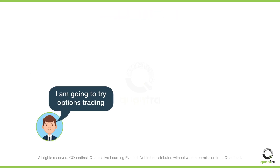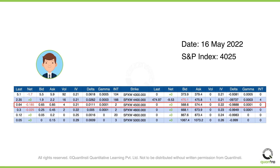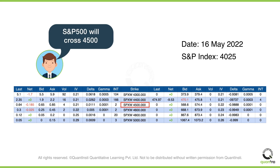John has learned about options and is excited to try his luck with options. On 16 May 2022, the S&P 500 index is at 4025. John thinks that the fall in S&P 500 is temporary, and he believes that the S&P 500 in the month of June will cross 4500. He buys the SPX call option for $1, with a strike price of 4500 and an expiry date of 17 June 2022.